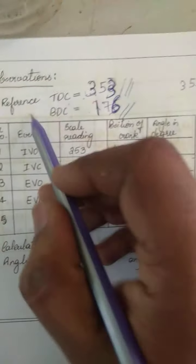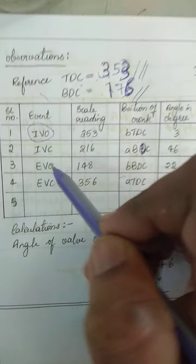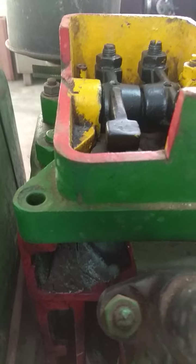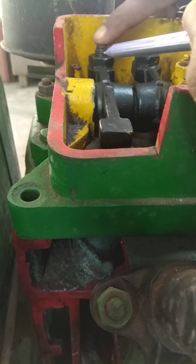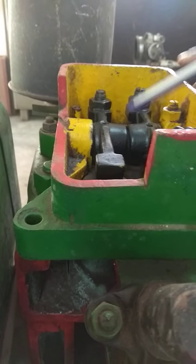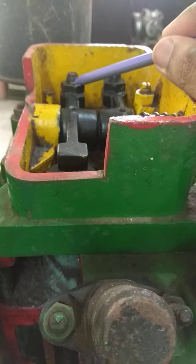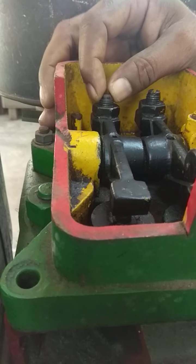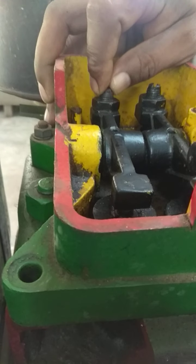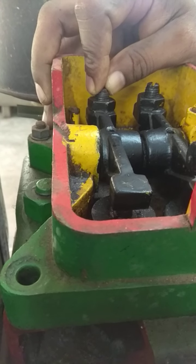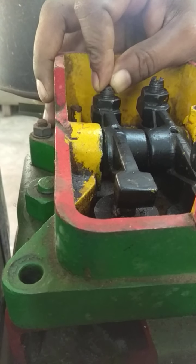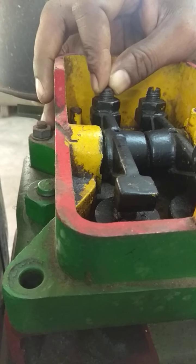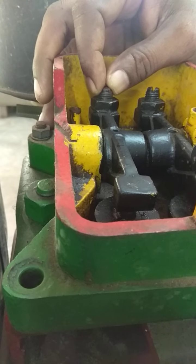Now we will try to find the inlet valve opening position. There are two valves here. This valve represents the inlet valve because it is closer to the filter, and this one represents the exhaust valve — it is closer to the silencer. We will find at what position the inlet valve opens. You can see this valve is loose here. When you rotate the wheel in a clockwise direction, this valve will get tightened. Whenever this valve gets tightened, stop the rotation and note down the angle.